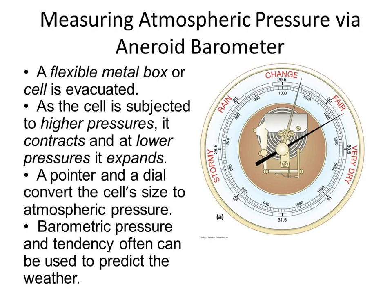Now, every time you buy one of these it'll have a little silver thing. What you would do is line it up, and then 24 hours later look at it again to see whether the black dial — which responds to the pressure — is lowering or raising. That would give us the tendency. There are three different scales: inches of mercury, centimeters, and millimeters.